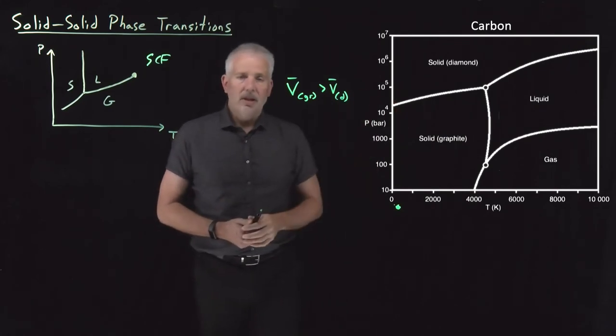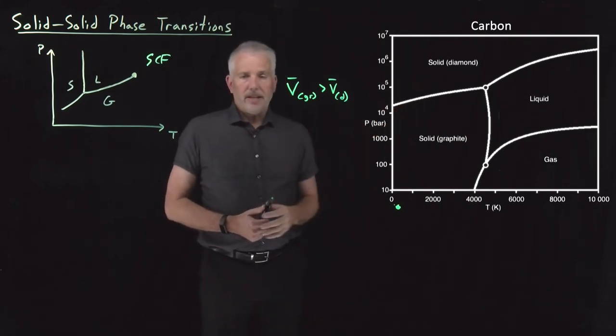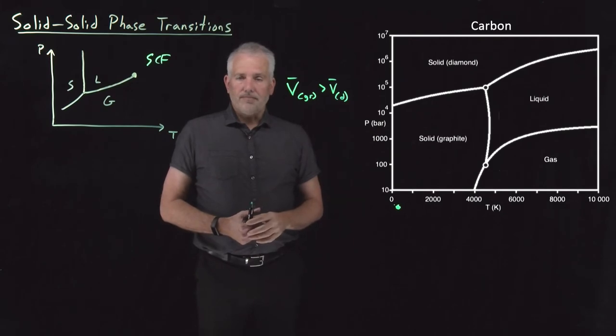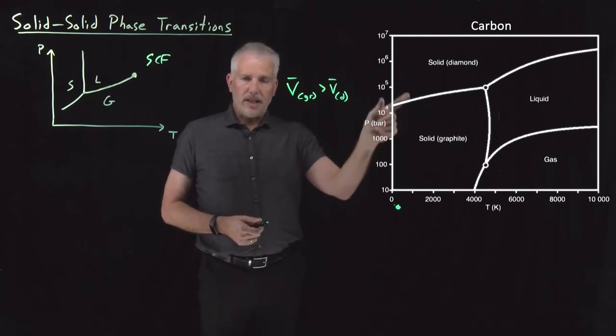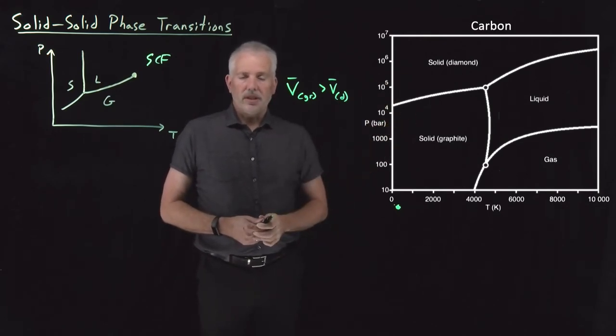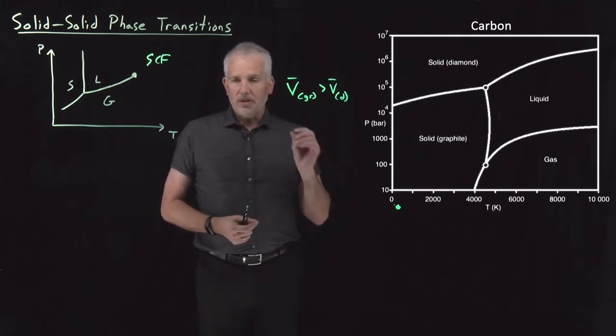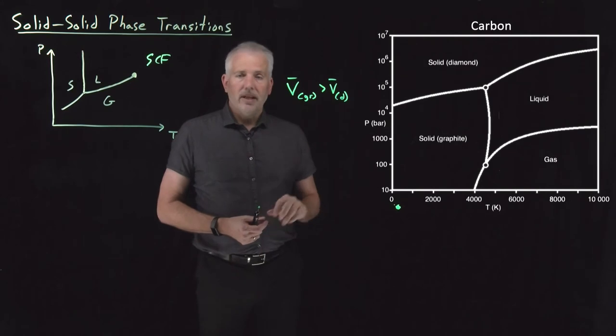All these features of the carbon phase diagram are similar to ones we've discussed for other substances with the extra complication now of just having more than one solid phase. In fact, most substances will have more than one different solid phase that is stable at different conditions. Another familiar substance that has more than one solid phase is water.